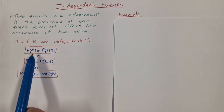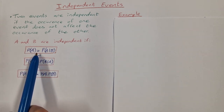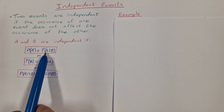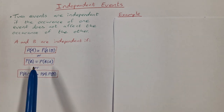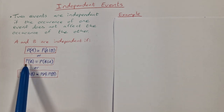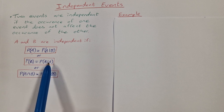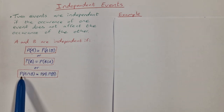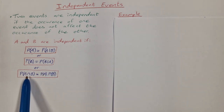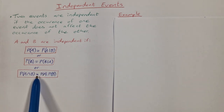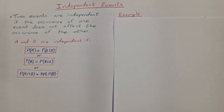If A and B are independent, then the probability of A is equal to the probability of A given B, or the probability of B is equal to the probability of B given A, or the probability of A intersection B is equal to the probability of A times the probability of B.